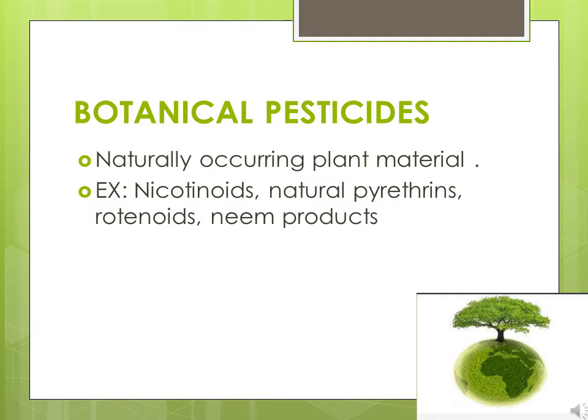First of all, I would like to focus on botanical pesticides. Botanical pesticides are naturally occurring plant materials that may be crude preparations of plant parts, ground to produce a dust or powder that can be used either in full strength or in diluted form. Several plant-based insecticides like nicotinoids, natural pyrethrins, rotenoids, and neem products are being used for this purpose.